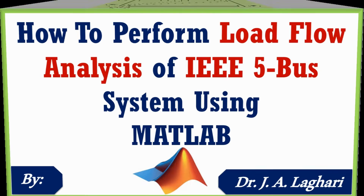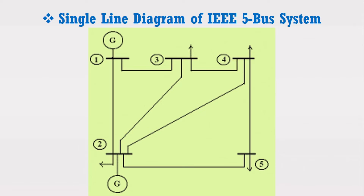Consider the figure which shows the single line diagram of IEEE 5 bus system. Bus 1 is considered as slack bus or swing bus. Another generator as well as load is connected at bus 2, whereas all the remaining buses are load buses. We have to determine the voltages at bus 2, 3, 4 and 5 using Newton-Raphson load flow method. Furthermore, we have to find the slack bus real and reactive power.